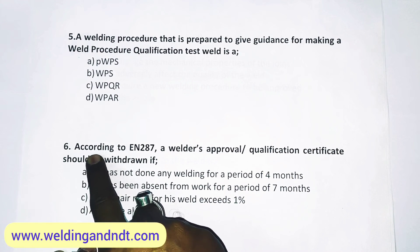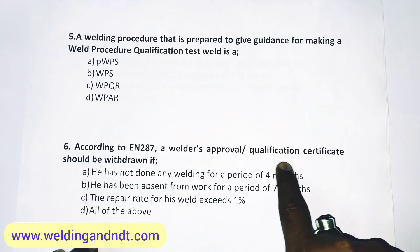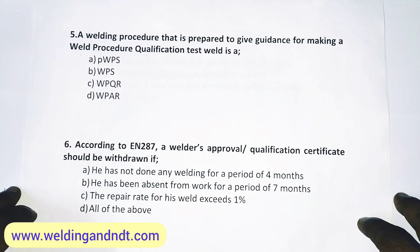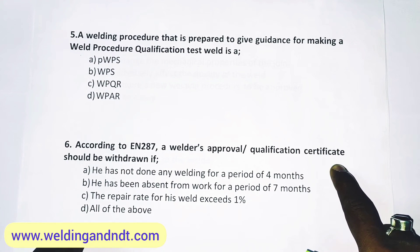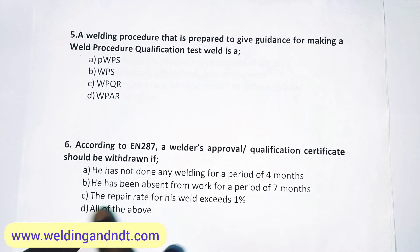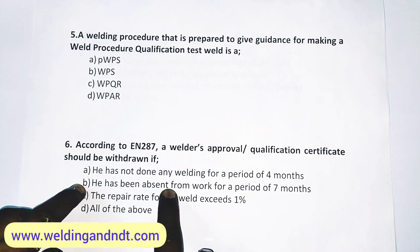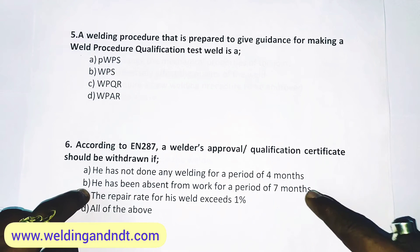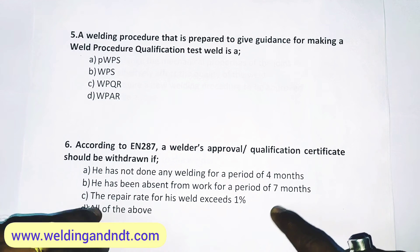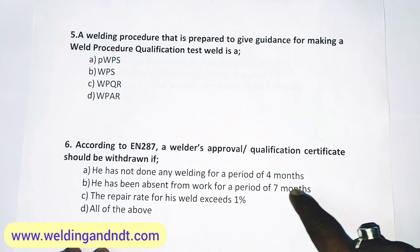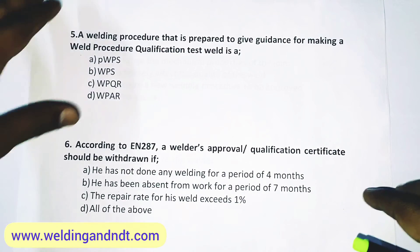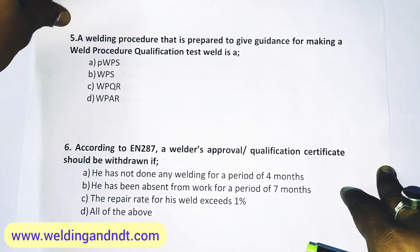Question number 6: According to EN 287, a welder's approval or qualification certificate should be withdrawn. I have not explained this during my video lecture series, but the answer is B — he has been absent from work for a period of 7 months. If a welder is absent or not doing welding for a period of 7 months, then his qualification shall be withdrawn and he needs to give a fresh qualification test.